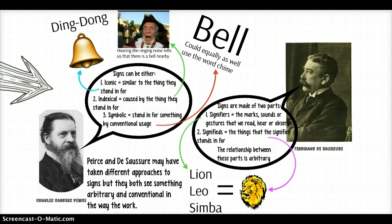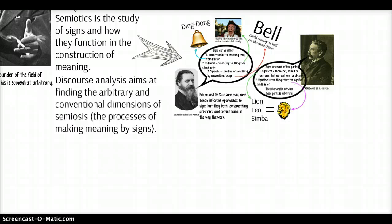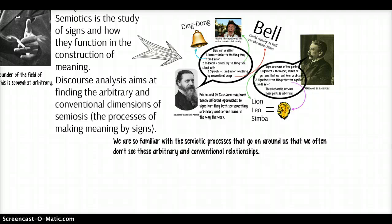Peirce and Saussure take different approaches to signs, but their work brings out that there is something arbitrary and conventional in the way signs work. This is important for discourse analysis, because in discourse analysis we aim at finding this arbitrary and conventional dimension of making meaning — the semiosis. We're so familiar with semiotic processes that go on around us that we often don't see the arbitrary and conventional. We can in a way be hijacked by it. Just as the fish is always in the water and loses sight of the water, we very often lose sight of the fact that we're constantly engaged in semiosis.